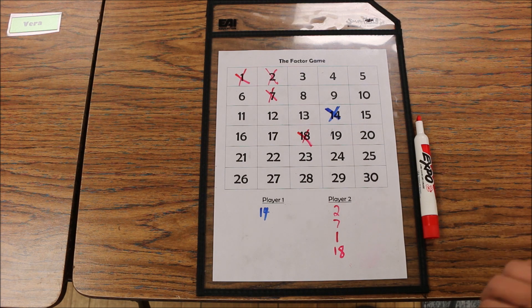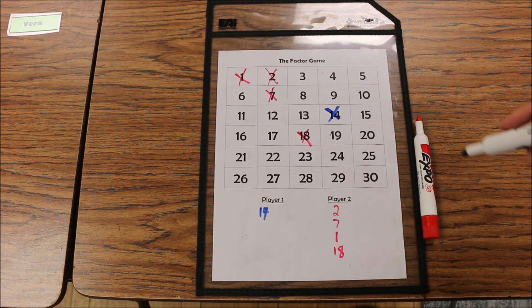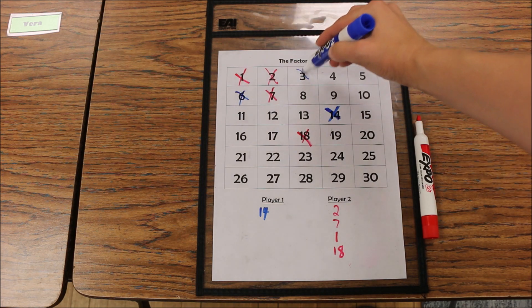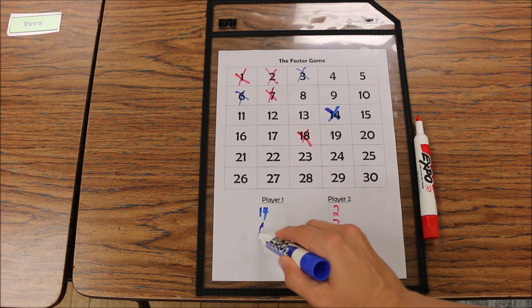And then player 1 marks all the factors of 18 that they can find. For example, 6 and 3 are factors of 18 because 6 times 3 makes 18, so player 1 would get 6 points and 3 points.